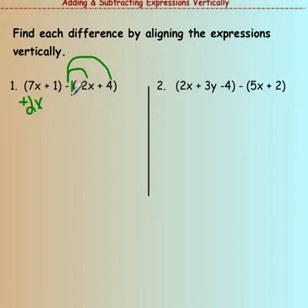And this negative 1 times positive 4 - taking the opposite of that positive 4 would be negative 4. Then we can just solve vertically. So 7x plus 2x is 9x, and then positive 1 minus 4 is negative 3.